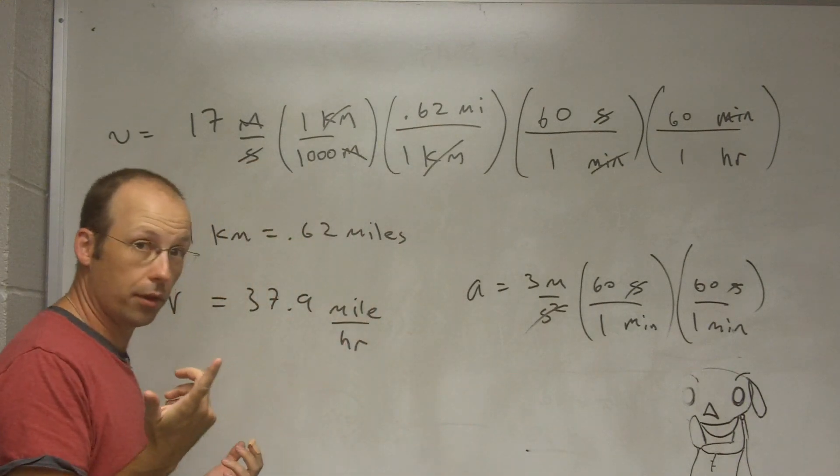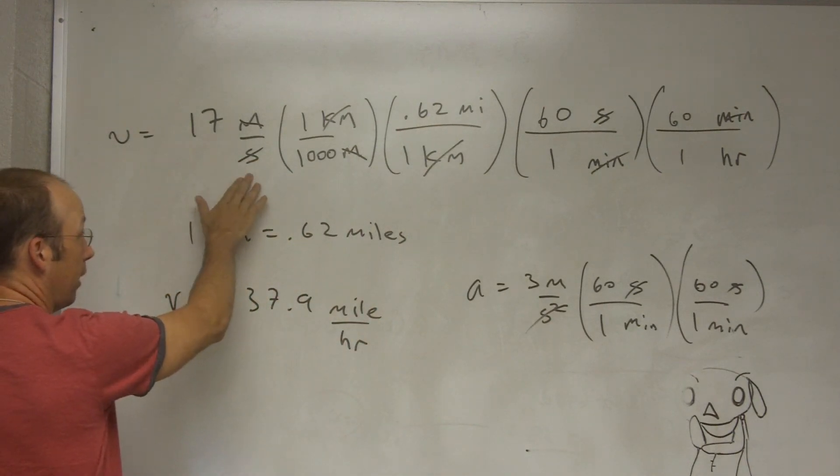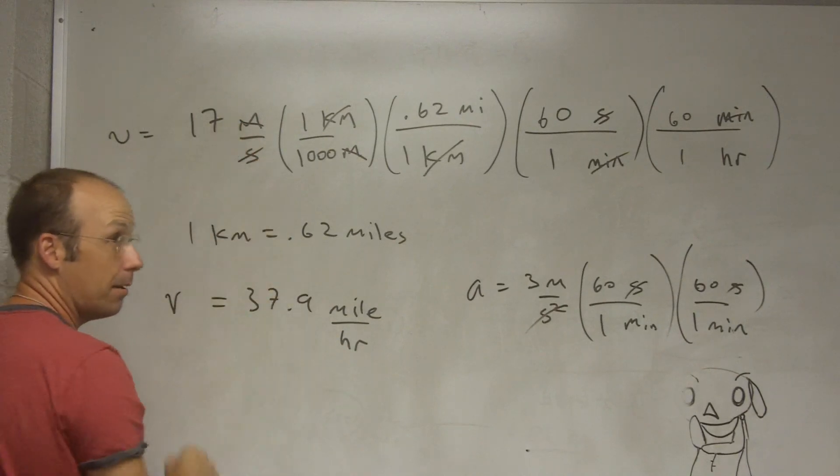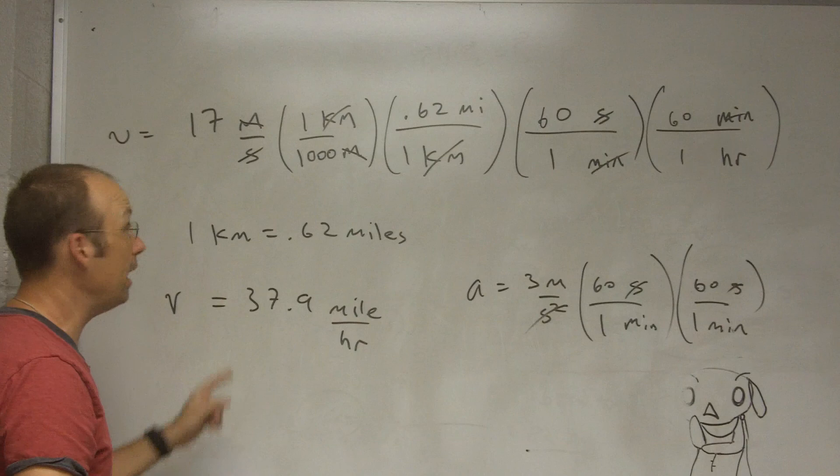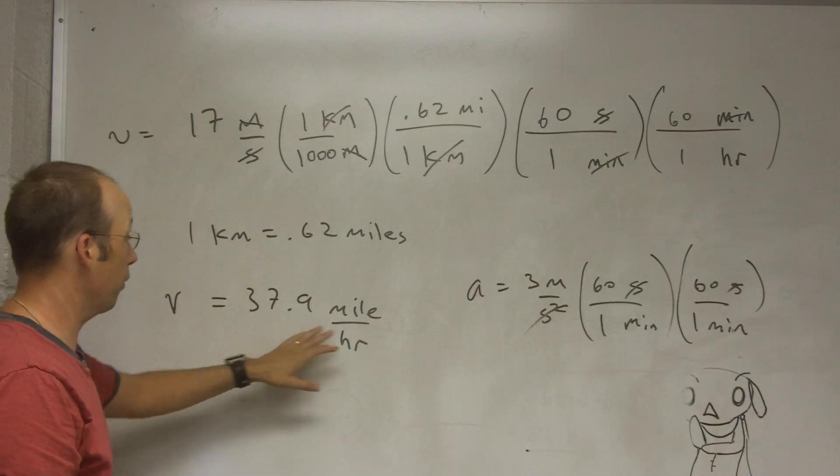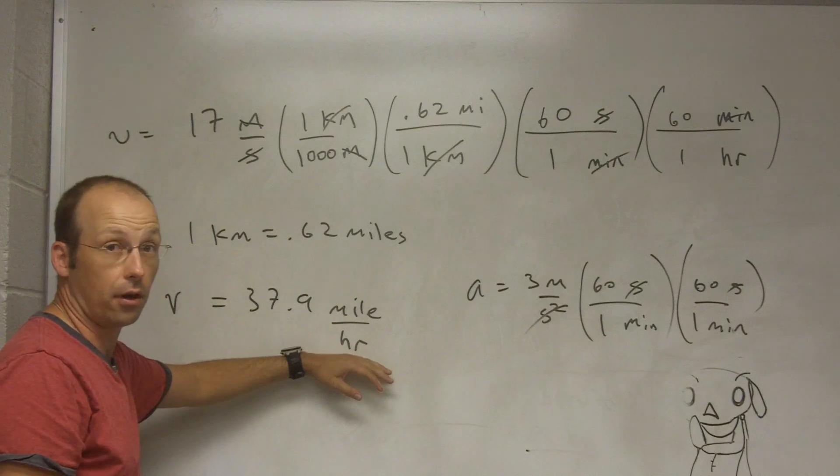Just so you know the importance here. Look. 17 meters per second. 37.9 miles per hour. These are the same thing. They're the same thing even though the numerical part is different. Okay. That's the most important thing that tells you how important these units are. Okay.